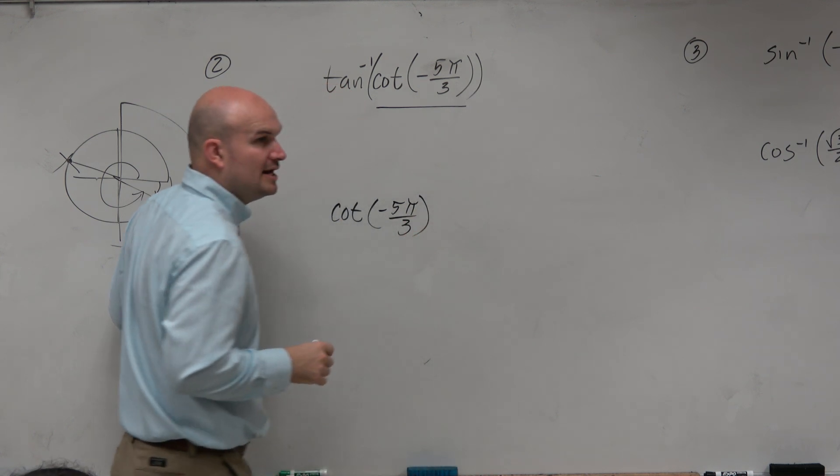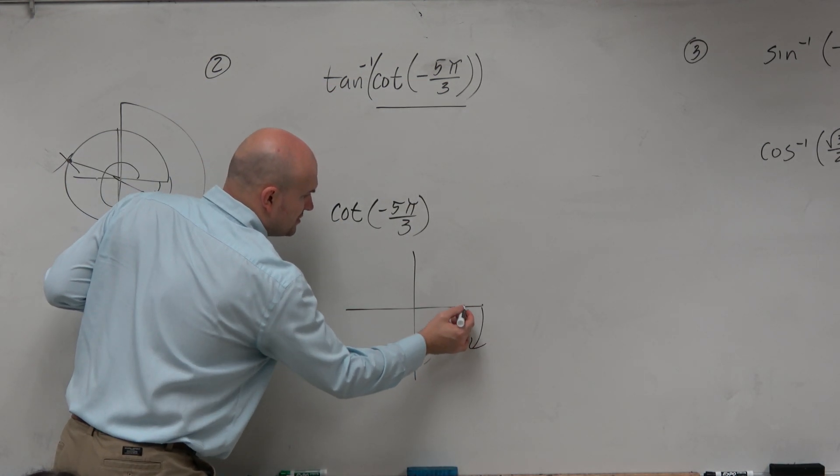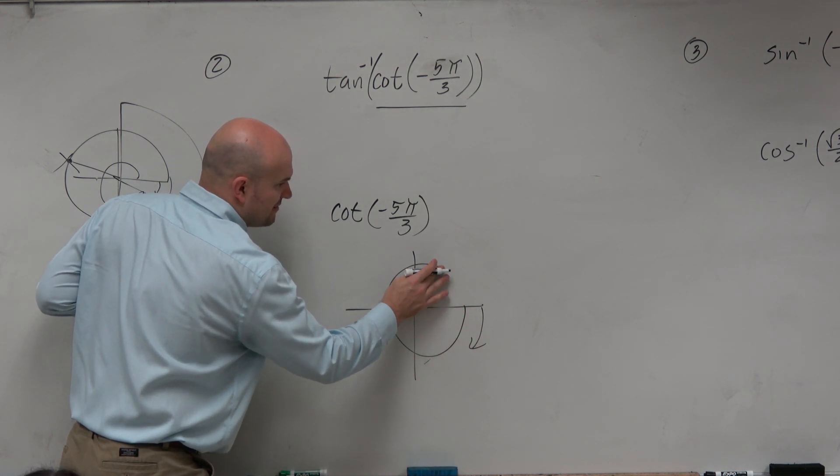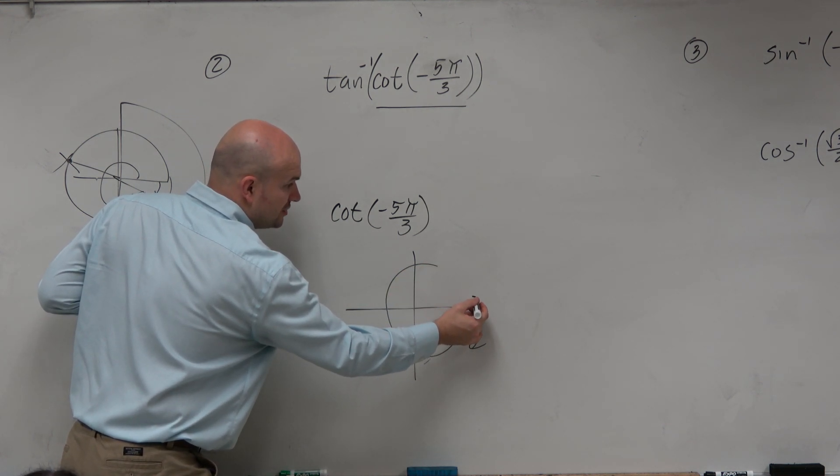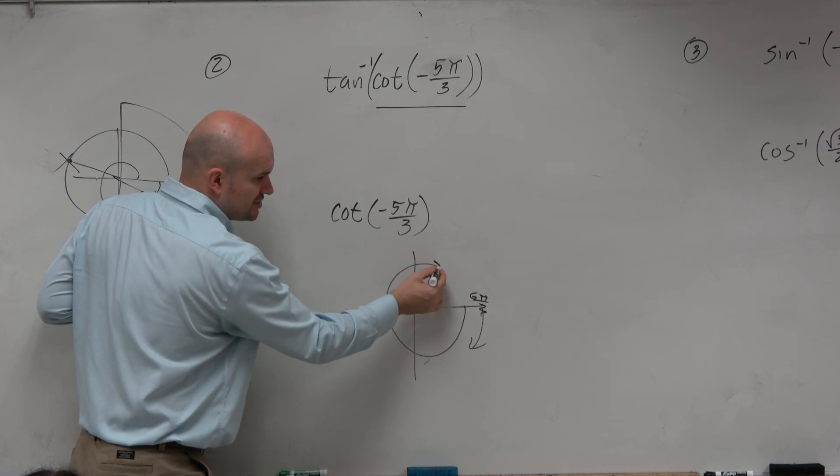And since I'm so good at applying my unit circle, I'm going to go in the negative direction. Negative 5 pi over 3, or negative 6 pi over 3, is all the way around the circle, right? That's 2 pi. So 5 pi over 3 is just going to be pi over 3 short.